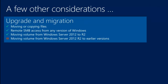Upgrade and migration: it's always okay to move or copy a file — the deduplication filter manages giving back the file in its original form. You can move and copy files all day long. You can access deduplicated files remotely from SMB from any version of Windows. You can move a volume that's been deduplicated in Windows Server 2012 and attach it to a Windows Server 2012 R2 machine — that works fine. But don't go the other way: moving from R2 back to an earlier version is not supported, and you can't move from 2012 back to 2008 R2 since deduplication doesn't exist there.